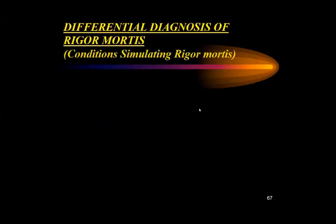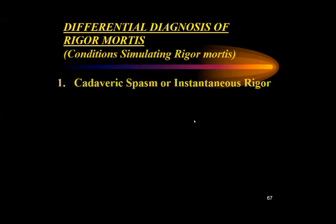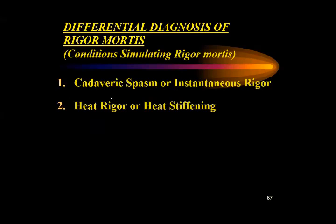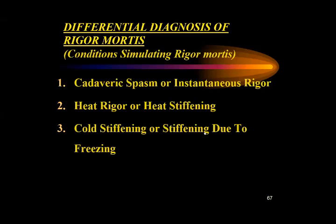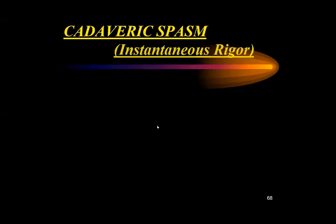The differential diagnosis of conditions that can be confused with rigor mortis includes: cadaveric spasm (also known as instantaneous rigor), heat rigor or heat stiffening, cold stiffening or stiffening due to freezing, and stiffening of putrefaction.